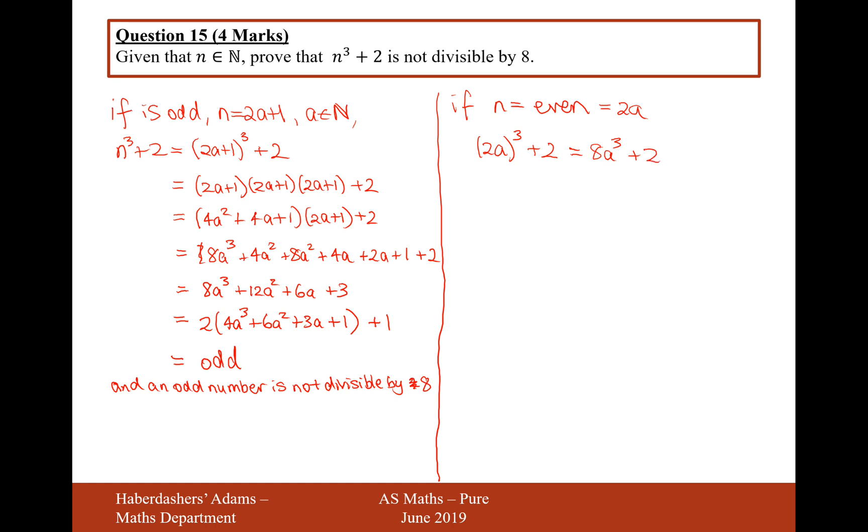Now, this is definitely going to be an even number, so we can't use the same excuse as the one before. But what we can say in the n equals even case is that 8a cubed plus 2 will always have a remainder 2 when divided by 8. Therefore, it's not divisible by 8.